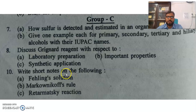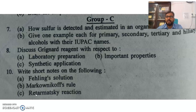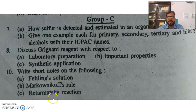Write short notes on the following: Fehling's solution, Markovnikov's rule, and Reformatsky reaction. Note: this is Reformatsky reaction, not retirement reaction — sometimes there is a spelling mistake in questions, so be careful. If you have prepared your chapters properly, then you can easily detect the error and spelling mistake.